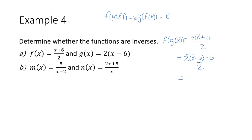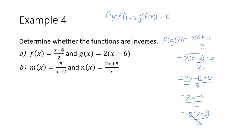Now I will distribute the 2 into the parentheses. This gives me 2x minus 12 plus 6 divided by 2. When we combine like terms we get 2x minus 6 divided by 2. Since I can factor a 2 out of the top and be left with x minus 3, the 2's cancel each other out, so this function reduces to x minus 3.